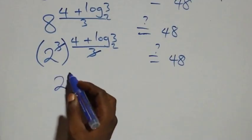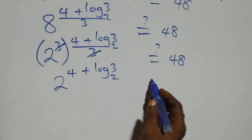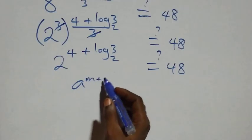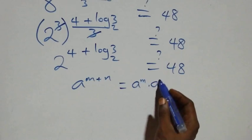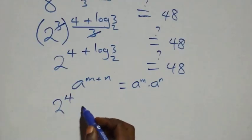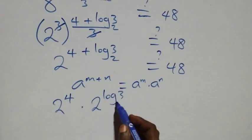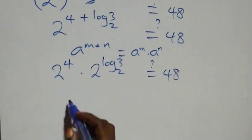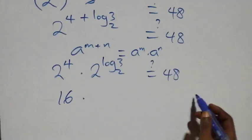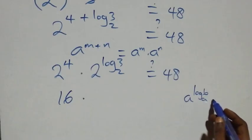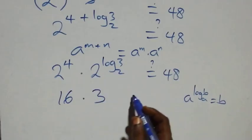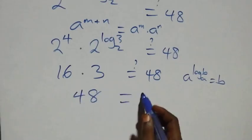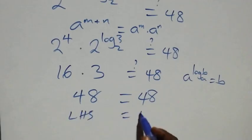We rewrite eight as two cubed, so we have two raised to power three times the quantity four plus log three base two over three. The three in the power and the three in the denominator cancel, leaving two raised to power four plus log three base two. By the law of indices this equals two raised to power four times two raised to power log three base two. Two to the fourth is sixteen, and by the logarithm identity a raised to log base a of b equals b, two raised to log three base two equals three. So sixteen times three equals forty-eight, which matches the right-hand side. The left-hand side equals the right-hand side.